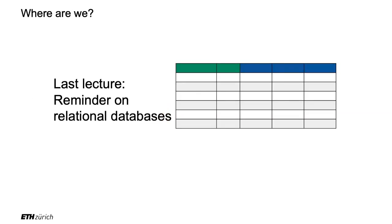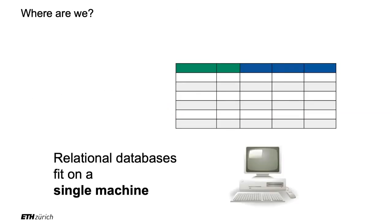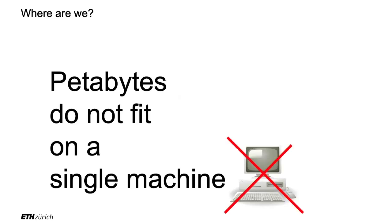We've looked at relational databases — these are on a single machine. A single machine has only up to, let's say, 30 terabytes. So that's not enough. The first thing we note is we need several machines.